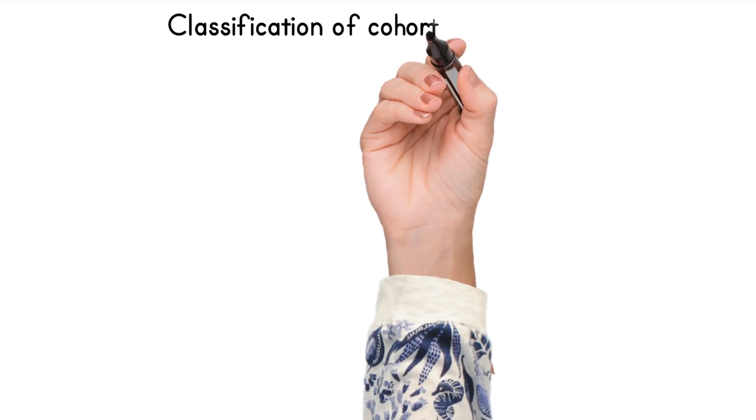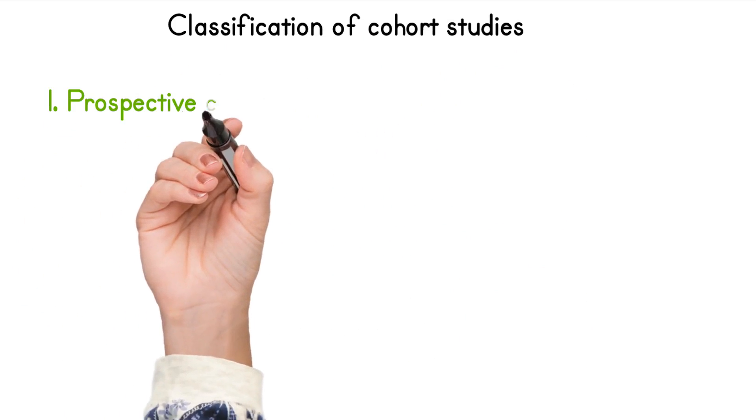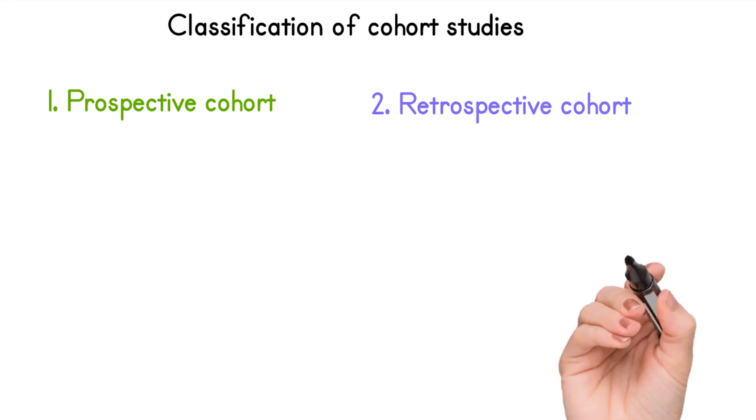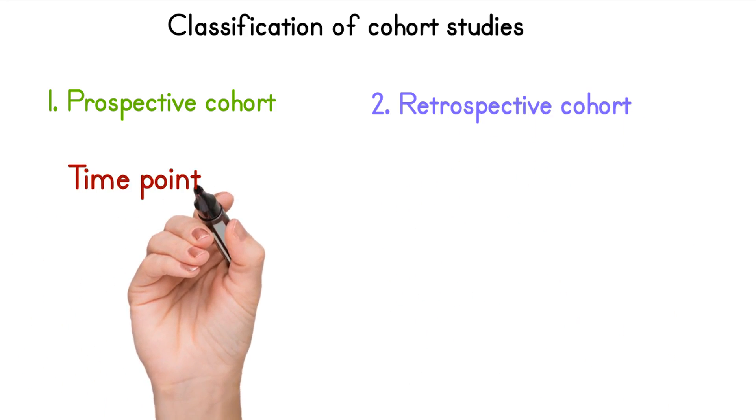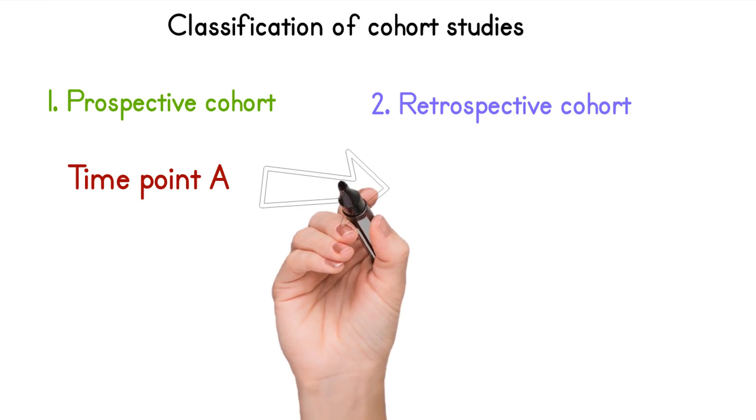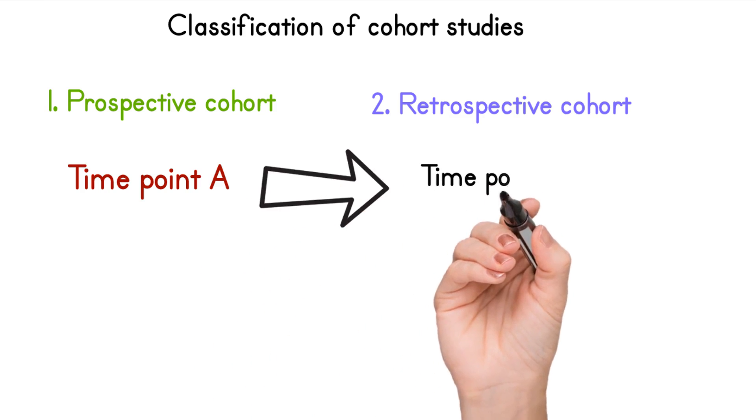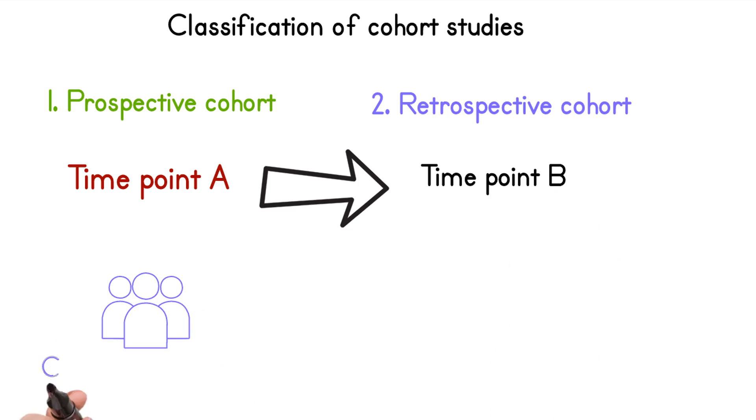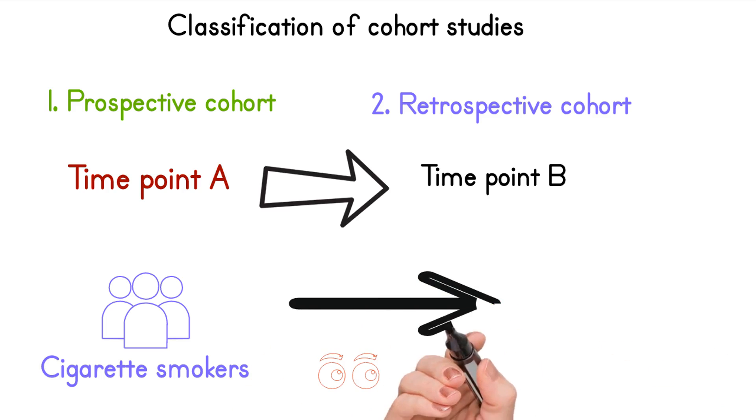Cohorts are classified as one, concurrent or prospective cohort, and two, retrospective or historical cohort. Prospective cohort design is when participants are followed up in real time to determine the incidence of the outcome or disease. For example, a group of cigarette smokers followed up to see who gets cancer or not.